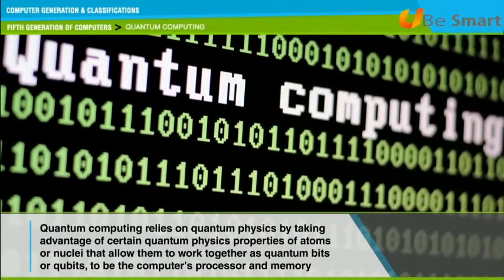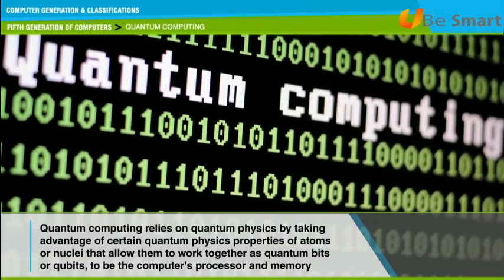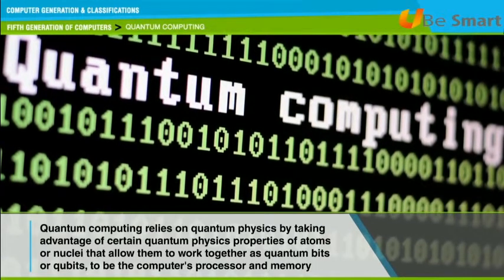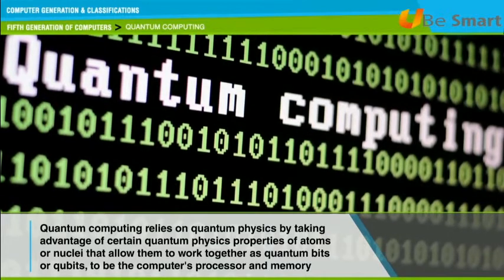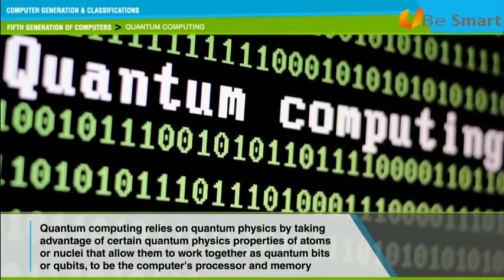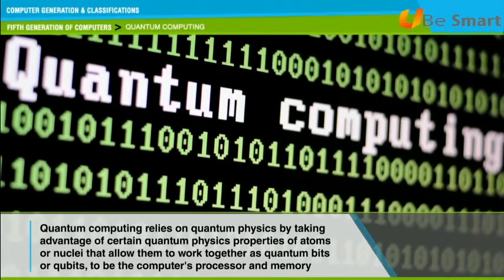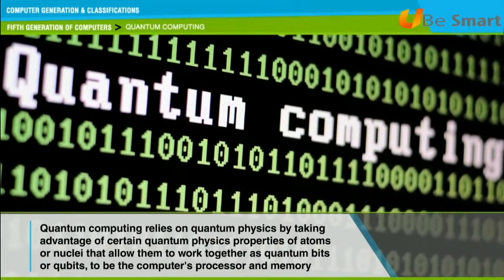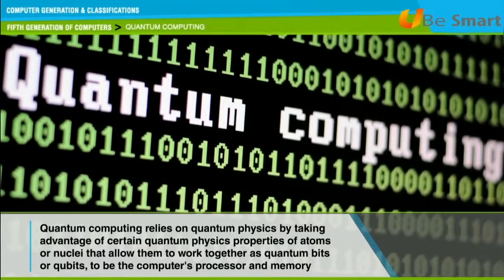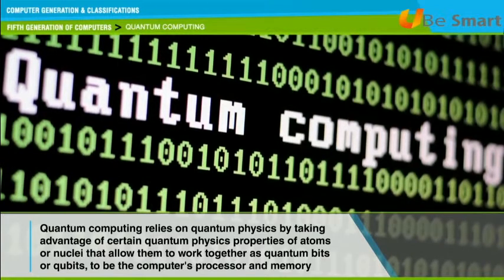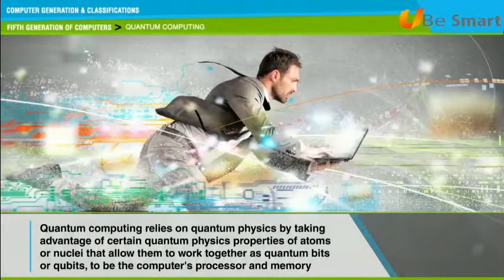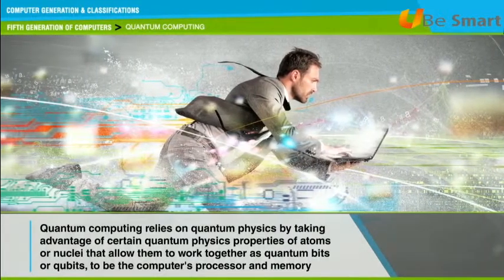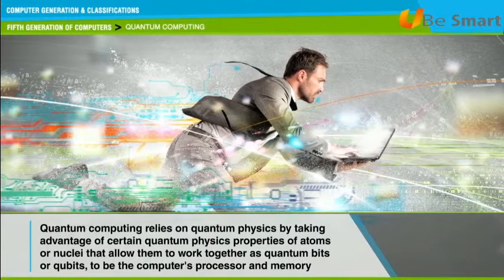Quantum computing was first proposed in the 1970s. It relies on quantum physics by taking advantage of certain properties of atoms or nuclei that allow them to work together as quantum bits, or qubits, to serve as the computer's processor and memory. Qubits can perform certain calculations exponentially faster than conventional computers.